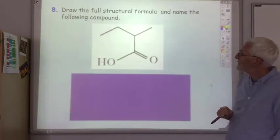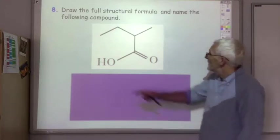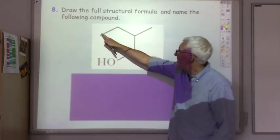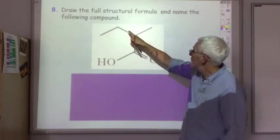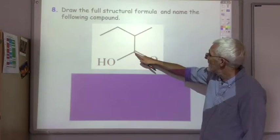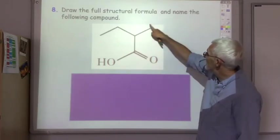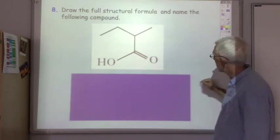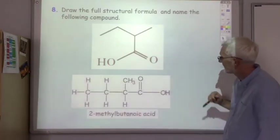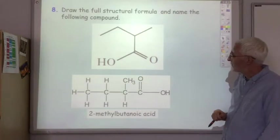This one. The main chain is one, two, three, four carbons. We've got a carboxyl group here and a methyl group here. So this is 2-methylbutanoic acid.